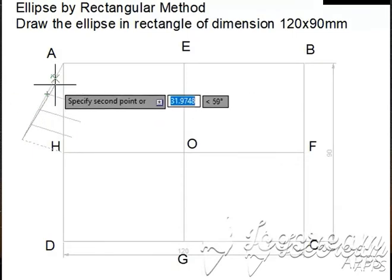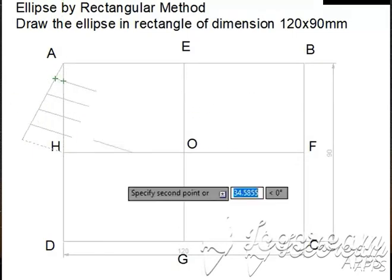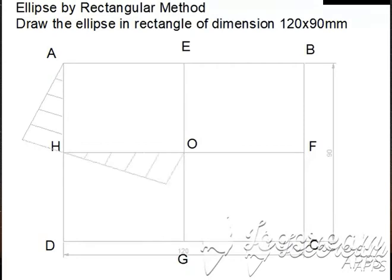Wherever these lines are cutting on AH, you will get the equal parts.